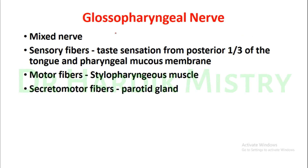We begin with the 9th cranial nerve examination — the Glossopharyngeal nerve. It is a mixed nerve, carrying sensory fibres, motor fibres and secretomotor fibres. Sensory fibres carry taste sensation from the posterior one-third of the tongue and pharyngeal mucous membrane, motor fibres supply the stylopharyngeus muscle, and secretomotor fibres supply the parotid gland.